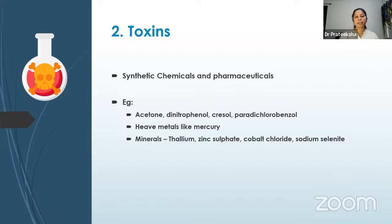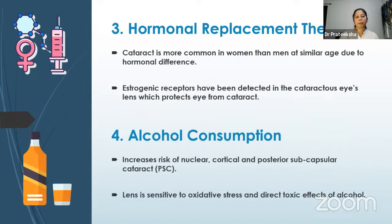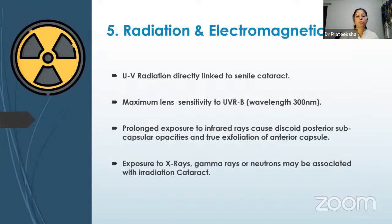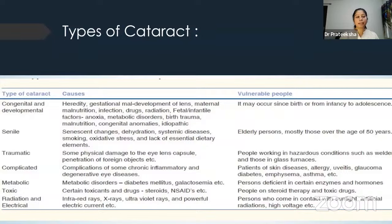Other cataractogenic toxins include synthetic chemicals like acetone, dinitrophenol, and paradichlorobenzene; heavy metals like mercury; and minerals like thallium, zinc sulfate, cobalt chloride, and sodium selenite. HRT (hormonal replacement therapy): cataract is more common in women than men of similar age due to hormonal differences — estrogenic receptors detected in cataractous lens capsule protect the eye. Alcohol consumption increases the risk of nuclear, cortical, and posterior subcapsular cataract through oxidative stress and direct toxic effects. UV radiation is directly linked to senile cataract — maximum lens sensitivity is to UV-B at approximately 300 nm wavelength. Prolonged infrared exposure causes discoid posterior subcapsular opacities and true exfoliation of the anterior capsule; X-rays, gamma rays, and neutrons may cause irradiation cataract.